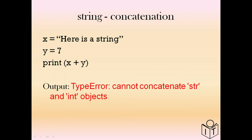Be careful though. In this example, Y is not a string — it's the number 7. If you try to add a string to an integer, it won't work. So in this example, 'here is a string' plus 7 will fail because one is a string and one is an integer.